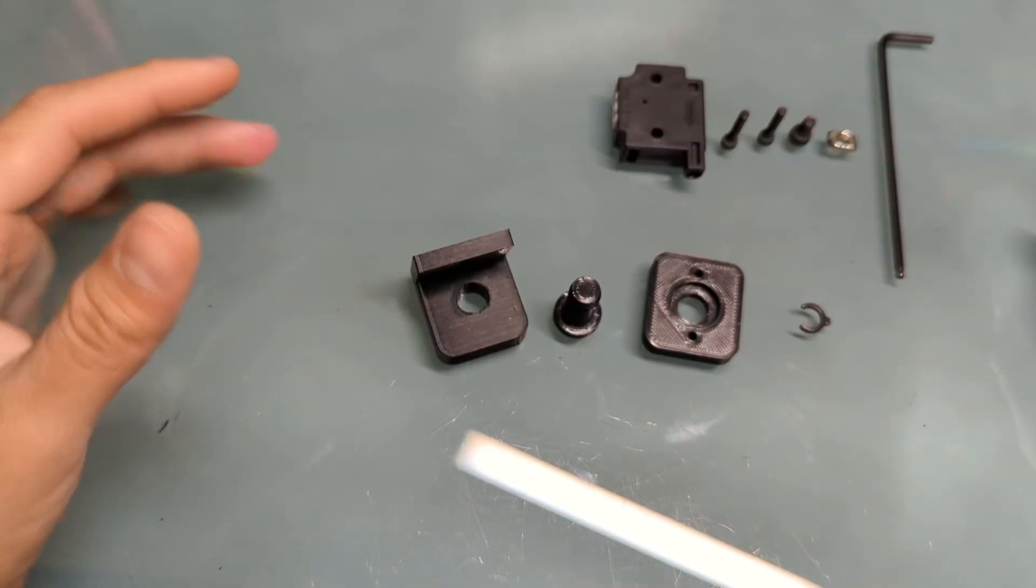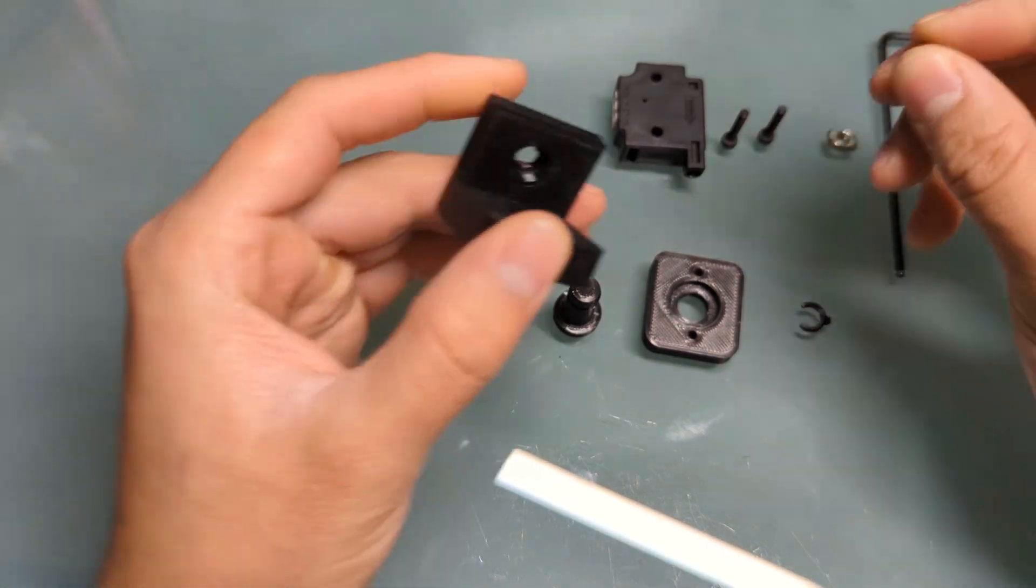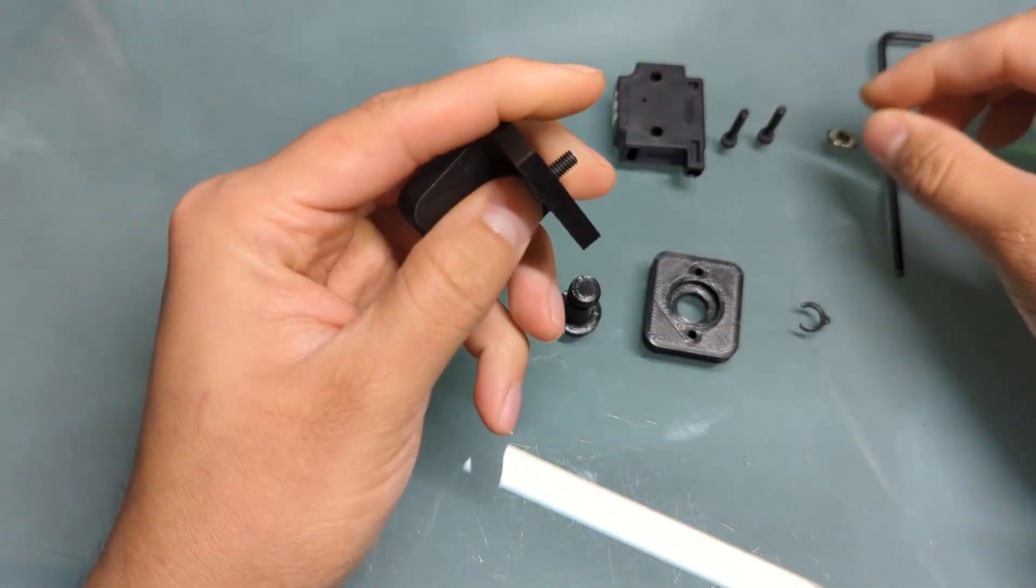Okay, and the installation goes as follows. Start off by adding your T-nut to the base.